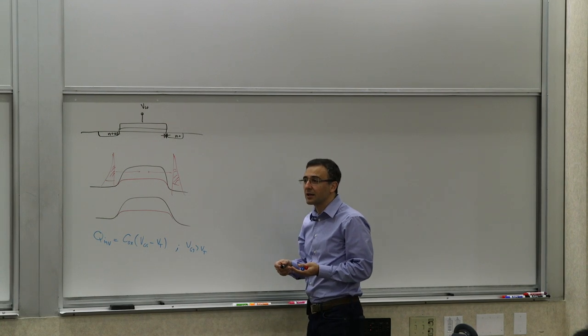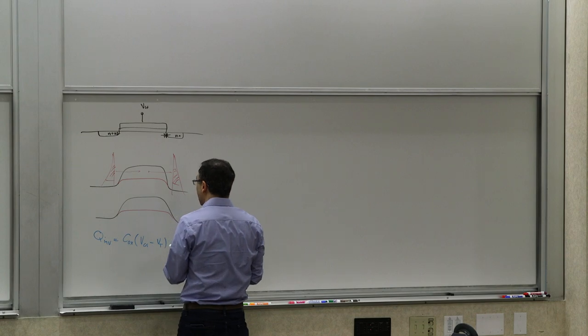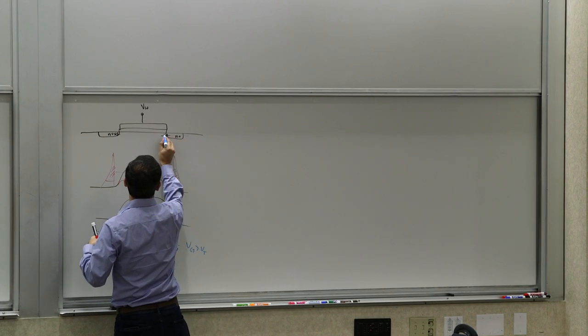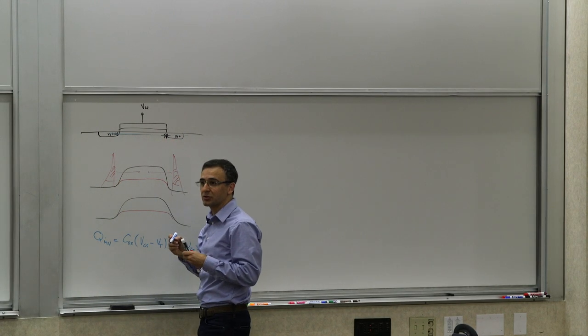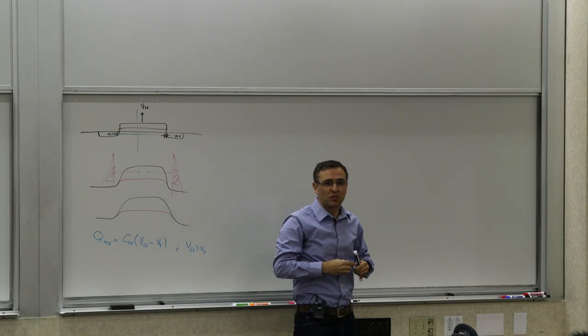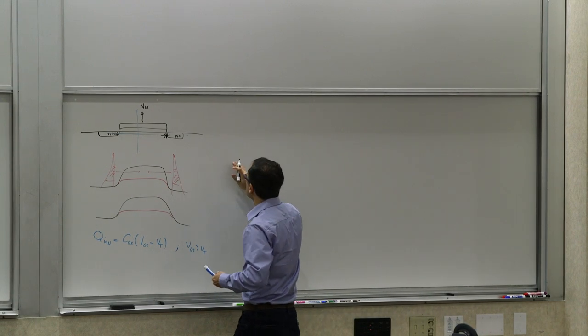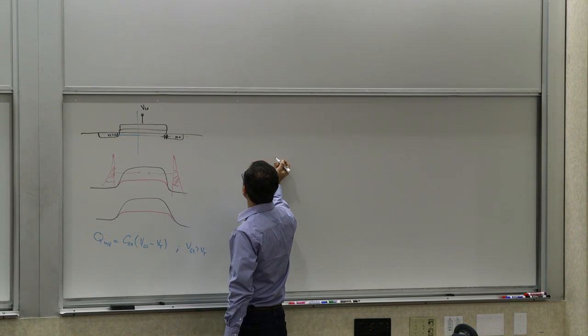But now if you look at the energy band diagram, the energy band diagram we drew here is across the channel in this direction. Now if you start looking at the energy band diagram across this dimension, which is what we did originally, we did it for PMOS, so we can actually now see how it looks like for NMOS.